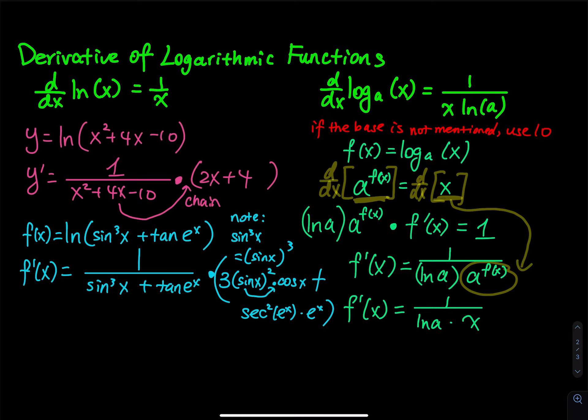Put the entire numerator on top. Important reminder: keep the 3 outside of the sine expression. If you place the 3 between sine and x, it's easy to forget to apply the chain rule and mistakenly treat the derivative of x as the only remaining step.